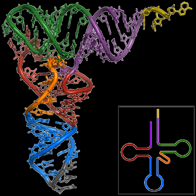The ribosome facilitates decoding by inducing the binding of complementary tRNA anticodon sequences to mRNA codons. The tRNAs carry specific amino acids that are chained together into a polypeptide as the mRNA passes through and is read by the ribosome. Translation proceeds in three phases. Initiation: the ribosome assembles around the target mRNA and the first tRNA is attached at the start codon.